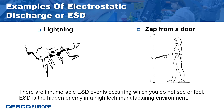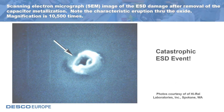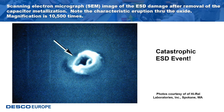25 percent of unidentified electronic failures are typically a result of ESD. Here we have a photo of ESD arcing from a person's finger to a component — not a computer simulation, though the technician was connected to a small magneto to enable the photograph of the ESD arcing, manifesting as a small lightning bolt. The same component is also shown on a scanning electron micrograph, magnified 10,500 times, showing ESD damage after removal of the capacitor metallization — note the characteristic eruption through the oxide.